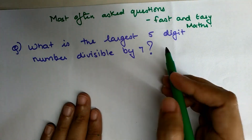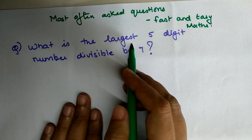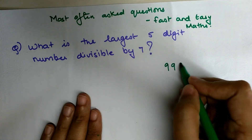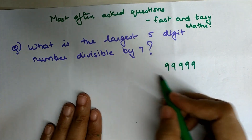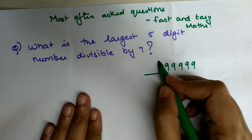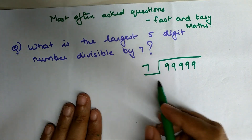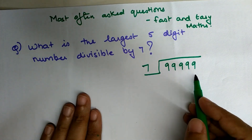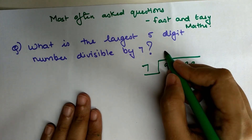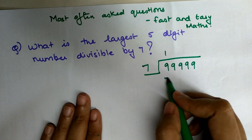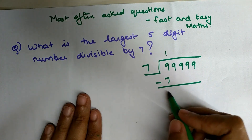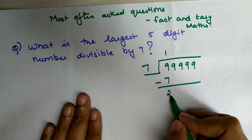Let's start by solving this one. The largest five-digit number is 99999 — that is five nines — and we want to find which is divisible by seven. So let's see what happens when you divide 99999 by seven. Seven ones are seven, so seven taken away from nine leaves just two.